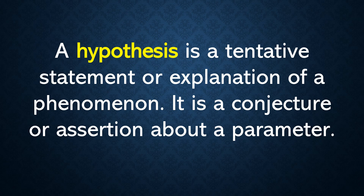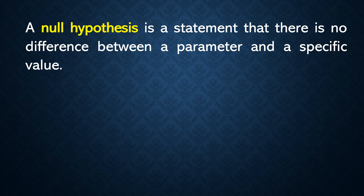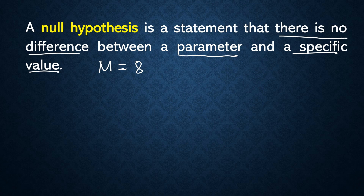There are two types of hypothesis. The first one is the null hypothesis. The null hypothesis is a statement that there is no difference between a parameter and a specific value. For instance, if our parameter is mu and a specific value is 8, null hypothesis always uses equals because there is no difference. So we have mu equals 8 — that is the representation for a null hypothesis.